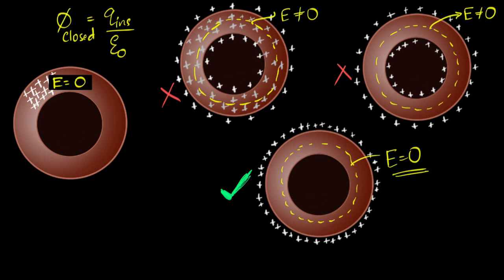So this means, whenever we're dealing with conductors, and this, by the way, only works for conductors. If this was an insulating material, charges would just stay there. They would not redistribute, because they're not free to move. But in conductors, charges will always, always redistribute themselves on the outer surface. Because this is the only way electric field inside the conductor can stay zero.